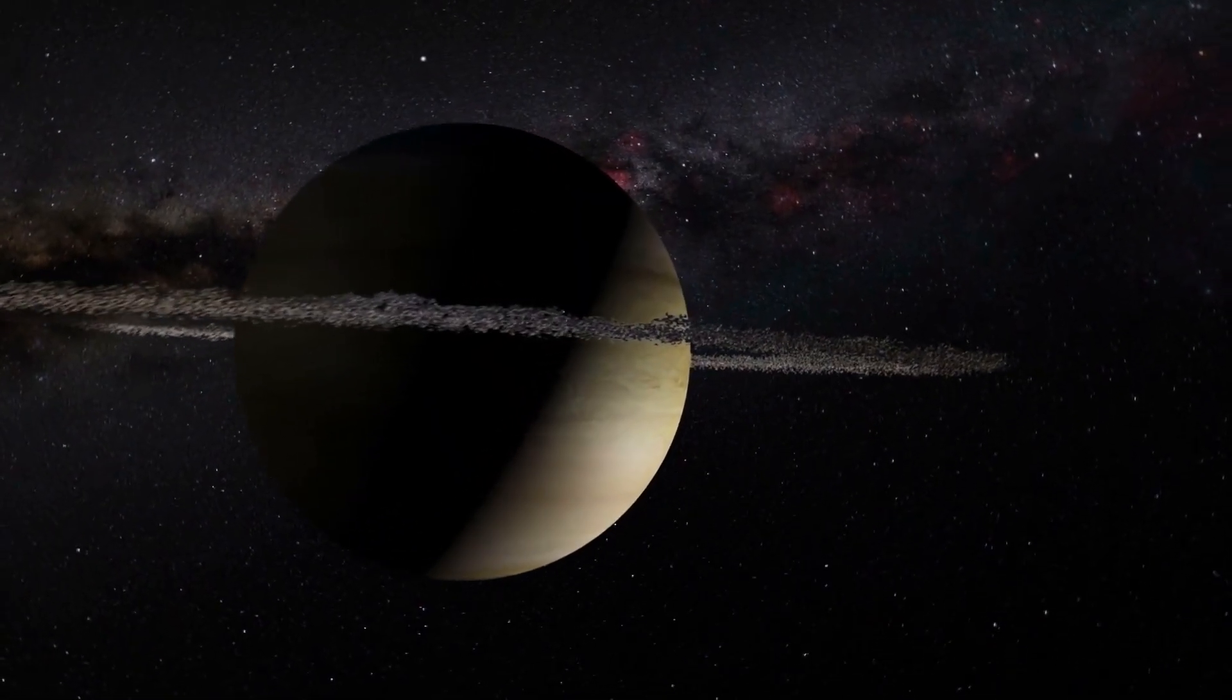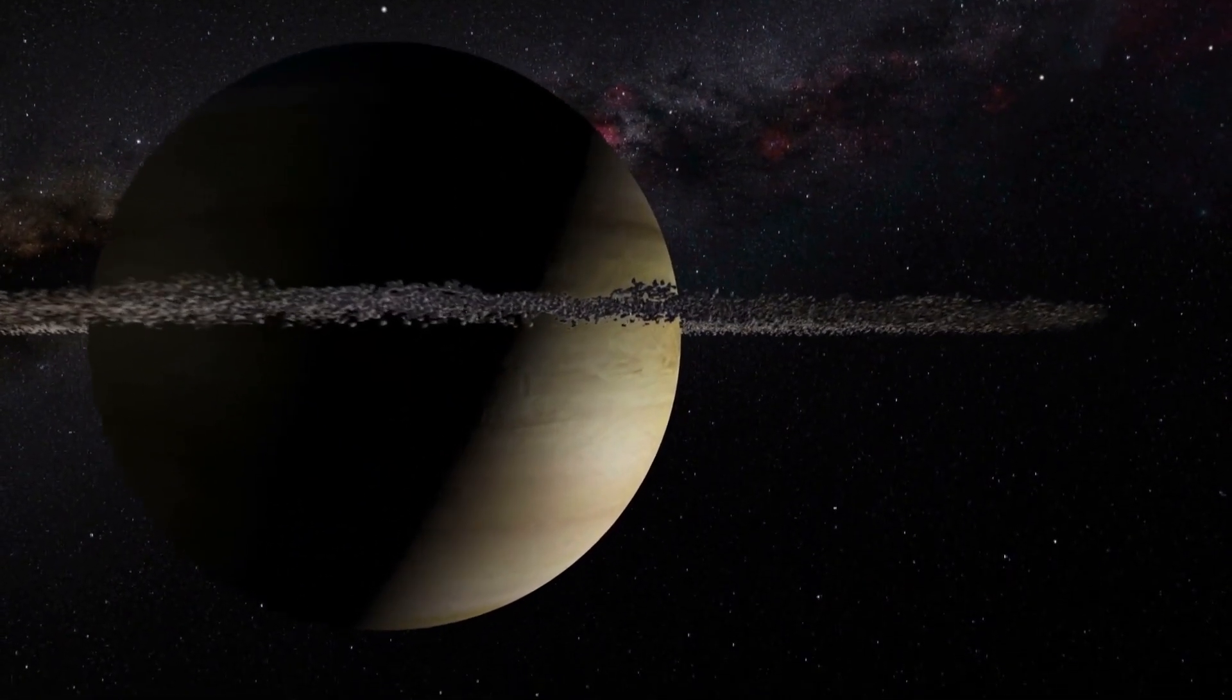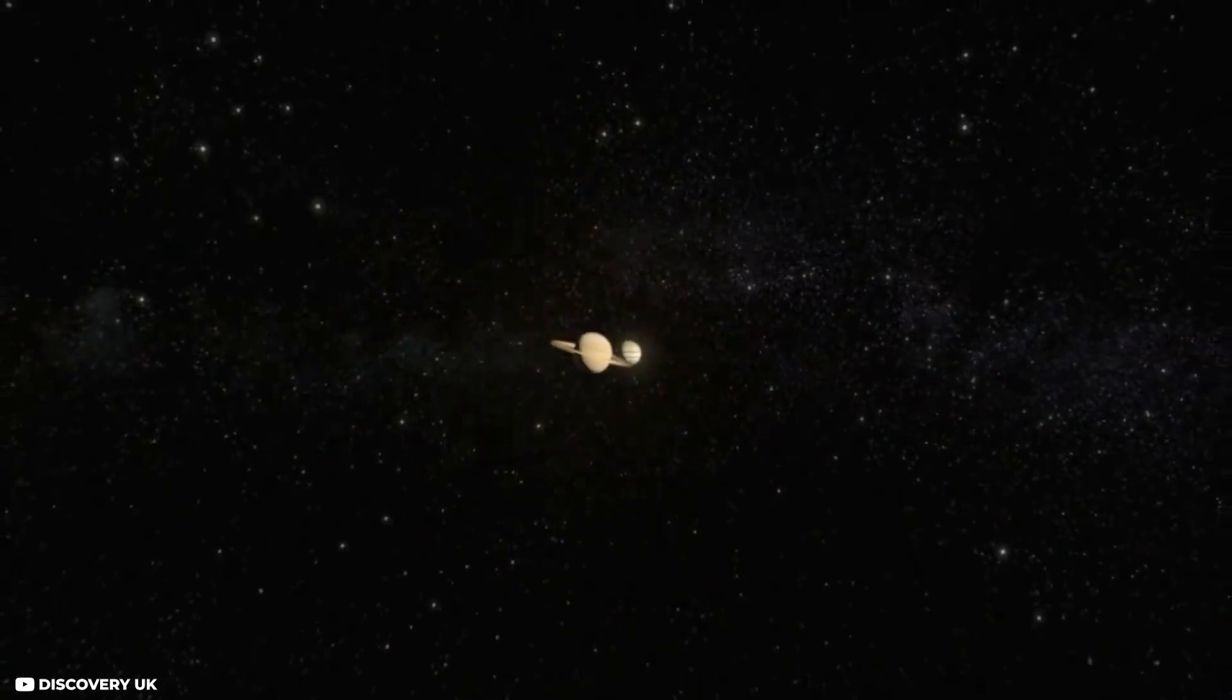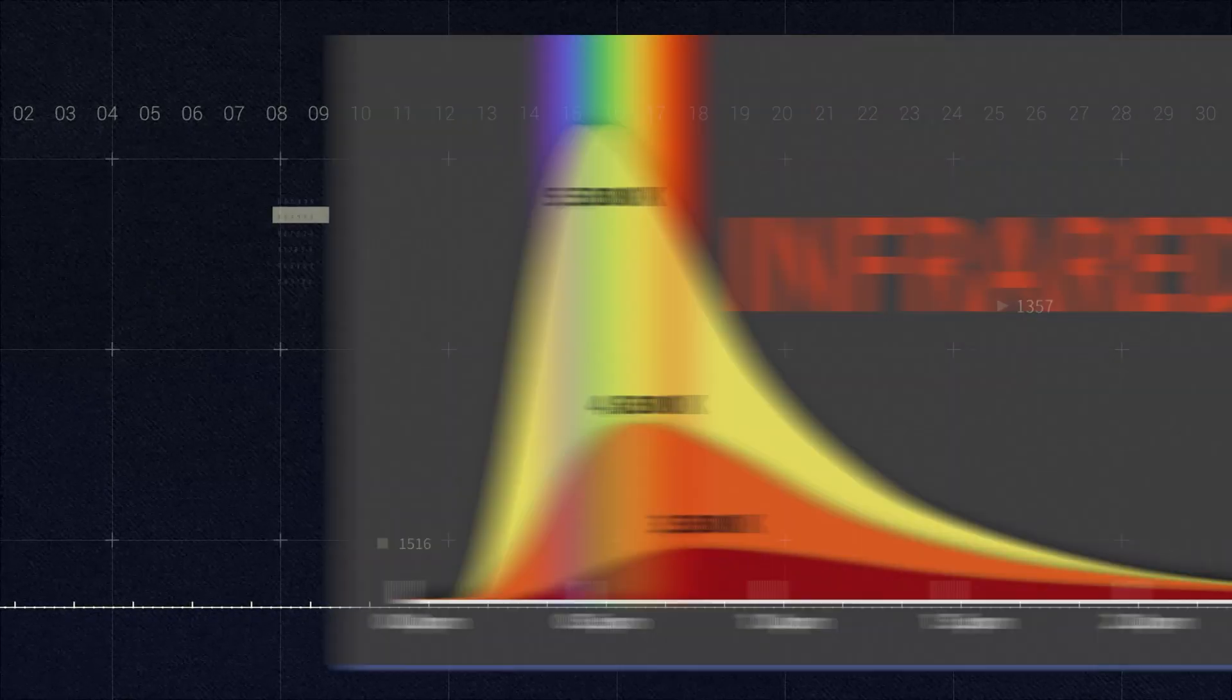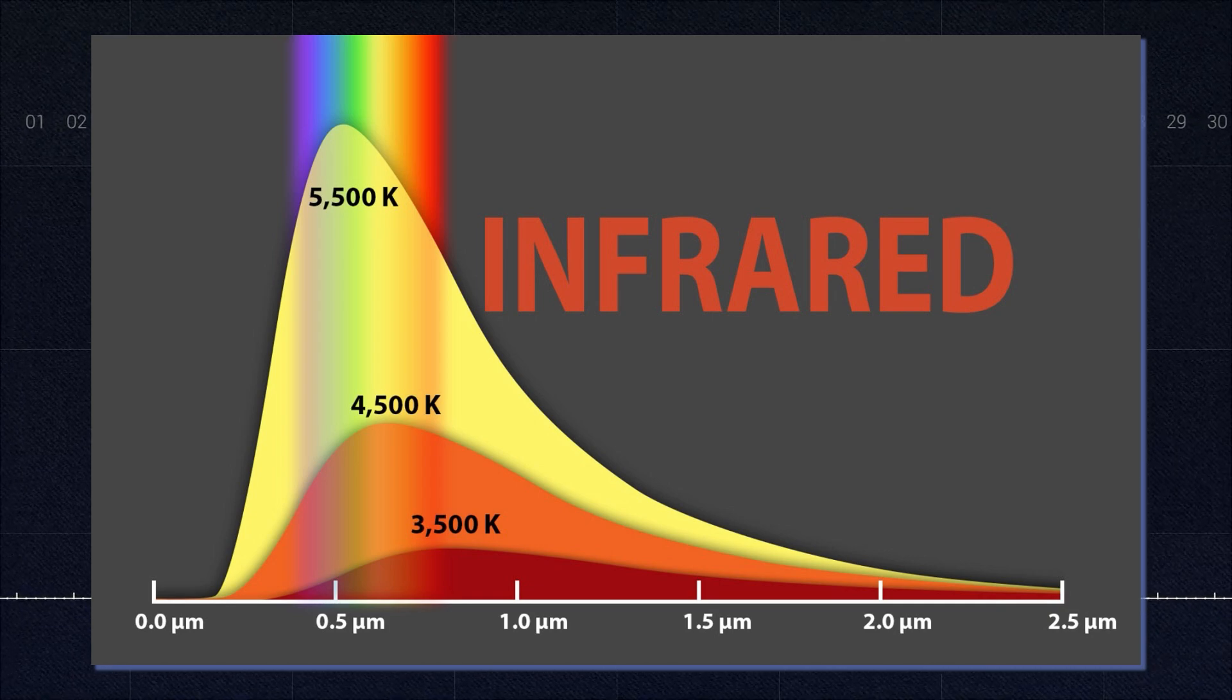Loeb argues that if a rocky planet has an atmosphere like Proxima b, it will absorb light from its star and re-emit it as infrared radiation.